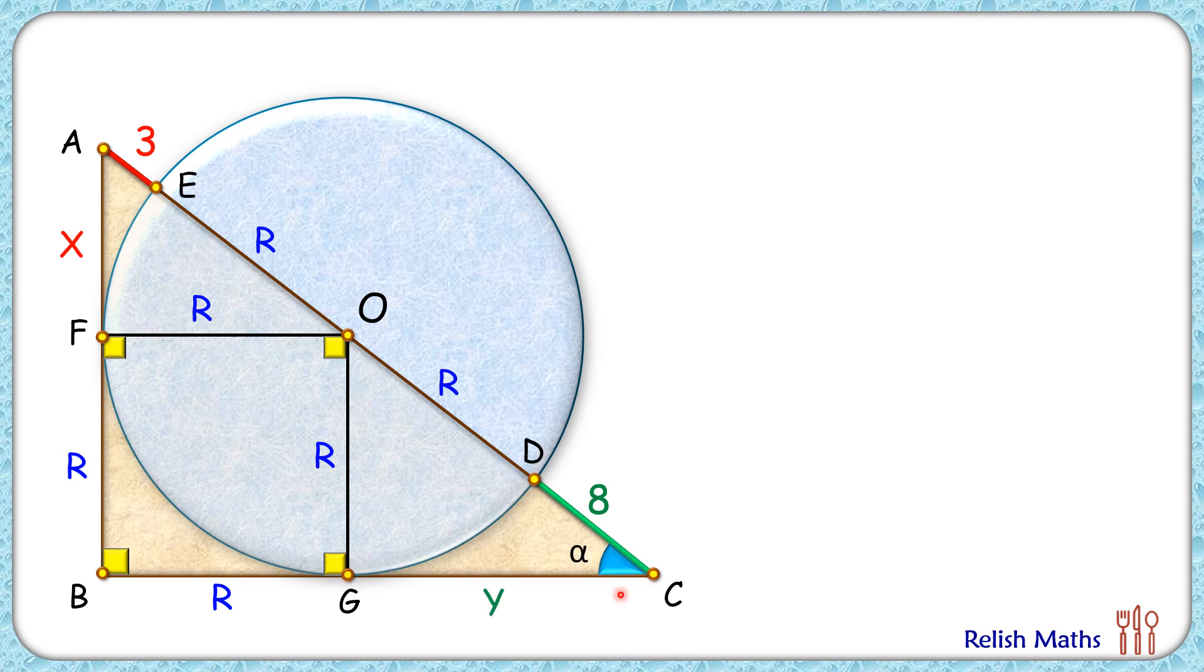Let's assume this angle C here is alpha degrees, and thus this angle here will be 90 minus alpha, and this is 90 minus alpha. This is 90, and thus this remaining angle here will be alpha degrees. Now if we look at triangle AFO and triangle OGC, they are similar by angle-angle similarity.